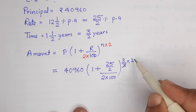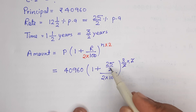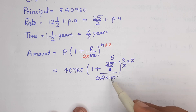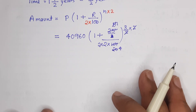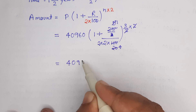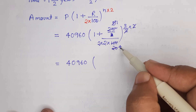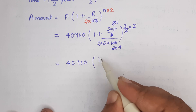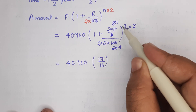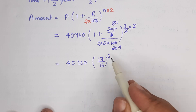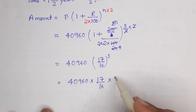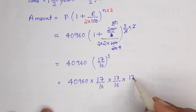अब देखो — यह 2 से 2 cancel। यह 2 divide में नीचे आ जाएगा। थोड़ा calculation और reduce कर लेते हैं। 5 की table से यह 5 times, 5 की table से यह 20 times, 5 की table से यह 1 times। थोड़ा और simplify करके लिखते हैं: 40960 × (17/16)^3 — denominator में 4 to the 8 यानी 2 to the 16, यानी 16। 1 + 1/16 = 17/16। Power कितनी चल रही है? Power है 3।